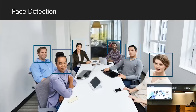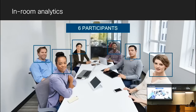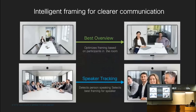The face detection models help us do conference room analytics — figuring out for any given meeting the number of participants who have joined from different locations. We also use face detection for intelligent framing, which means we crop and zoom into the relevant portions of the room to get the best image and enhance the video calling experience.